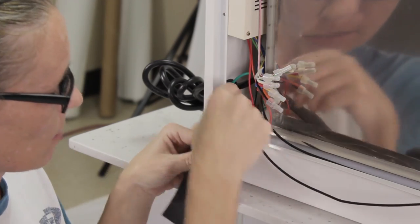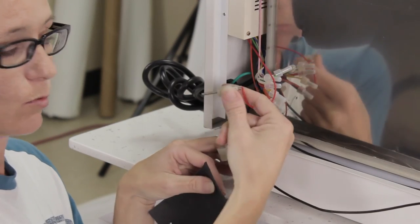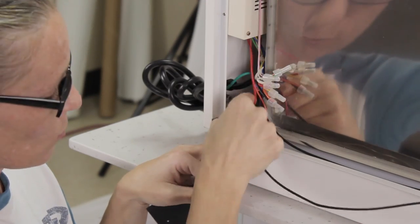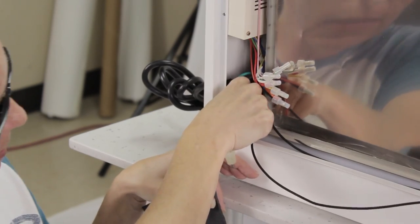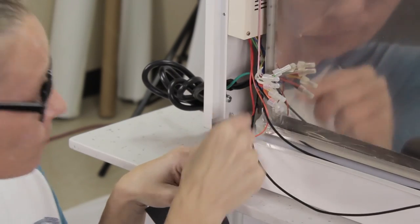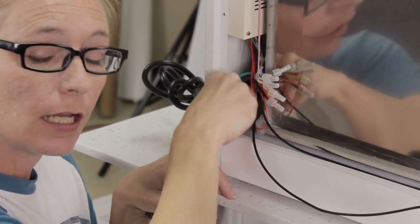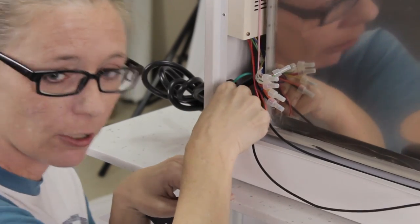When you're replacing the sensors there are two, you'll notice one right behind it. You just want to make sure that you put these all the way back in because if they are not back in all the way they will not detect the water and so your water levels will not be correct.